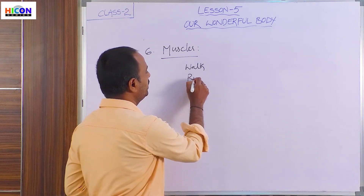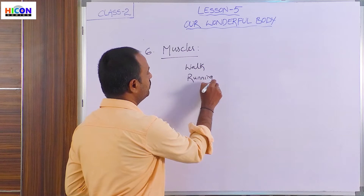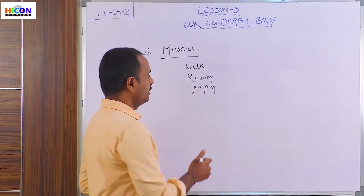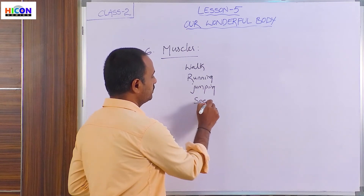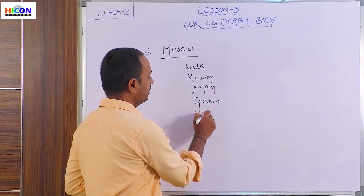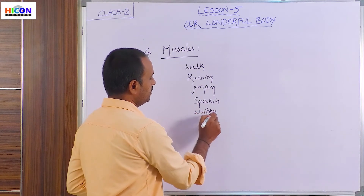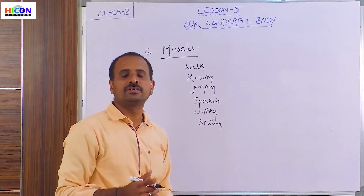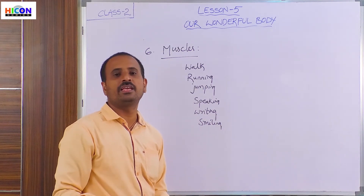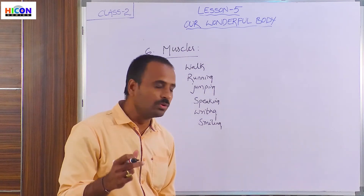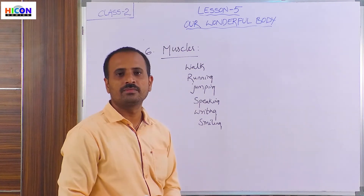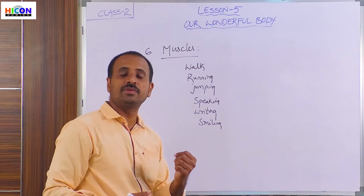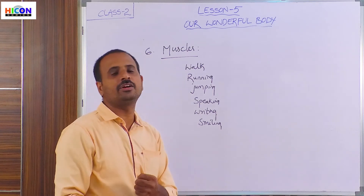We can do different types of activities in our daily life because of these muscles and bones — walking, running, jumping, speaking, writing, and smiling. All activities in our daily life are possible because of these muscles and bones. If there are no muscles, we cannot do any activity in our daily life.